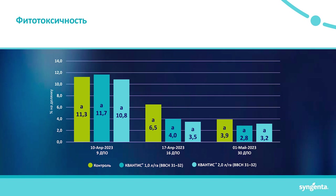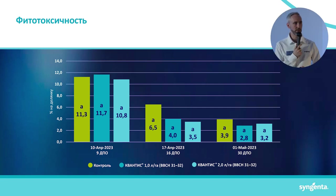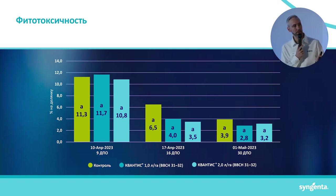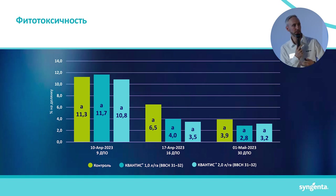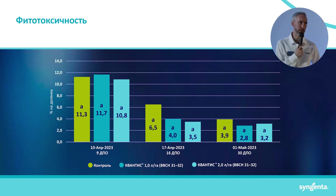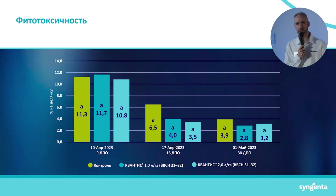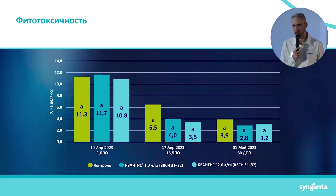Now regarding phytotoxicity: on this diagram you can see three variants — light green is the control, dark blue is Kvantis at 1 liter, and light blue is Kvantis at 2 liters. The numbers show the percentage of phytotoxicity on the plot, and the letters show statistical analysis — the experiment was run in six-fold replication. As you can see, all variants have the letter 'A,' meaning there is no statistically significant difference between them. I consider this very good — phytotoxicity is not increased.